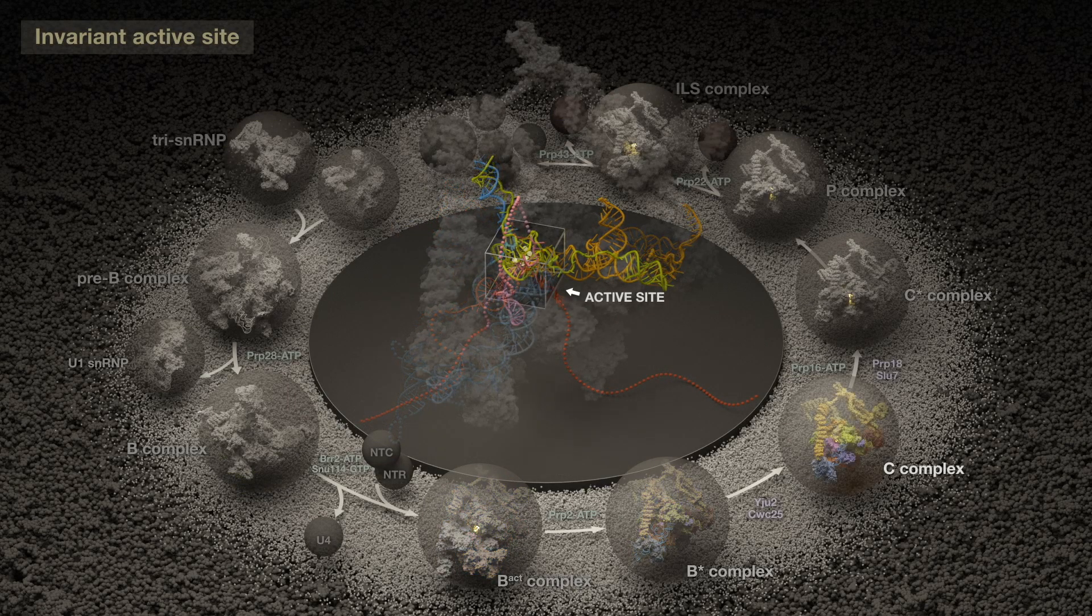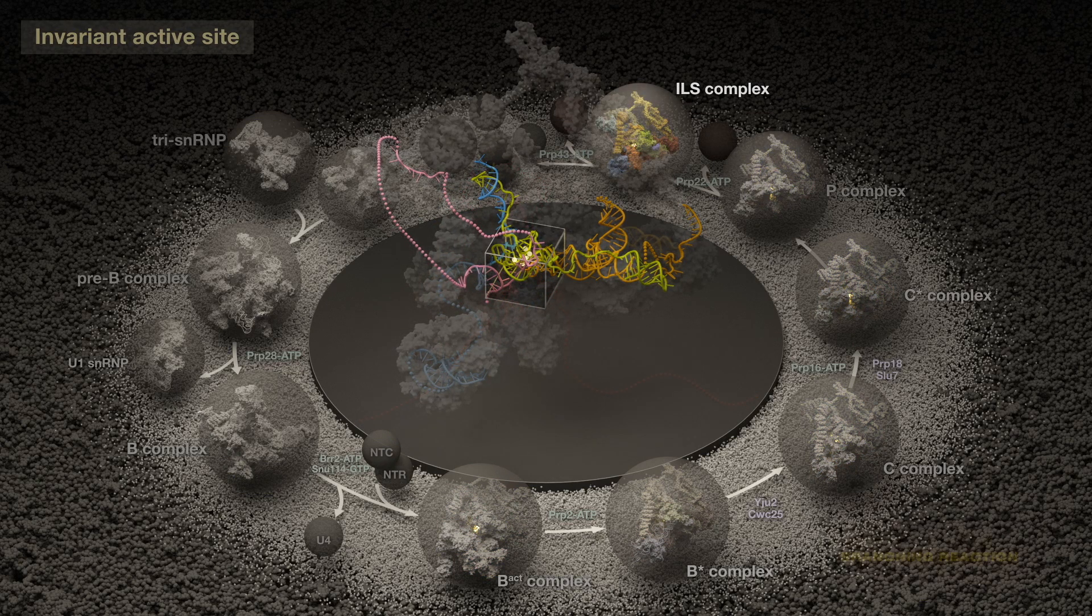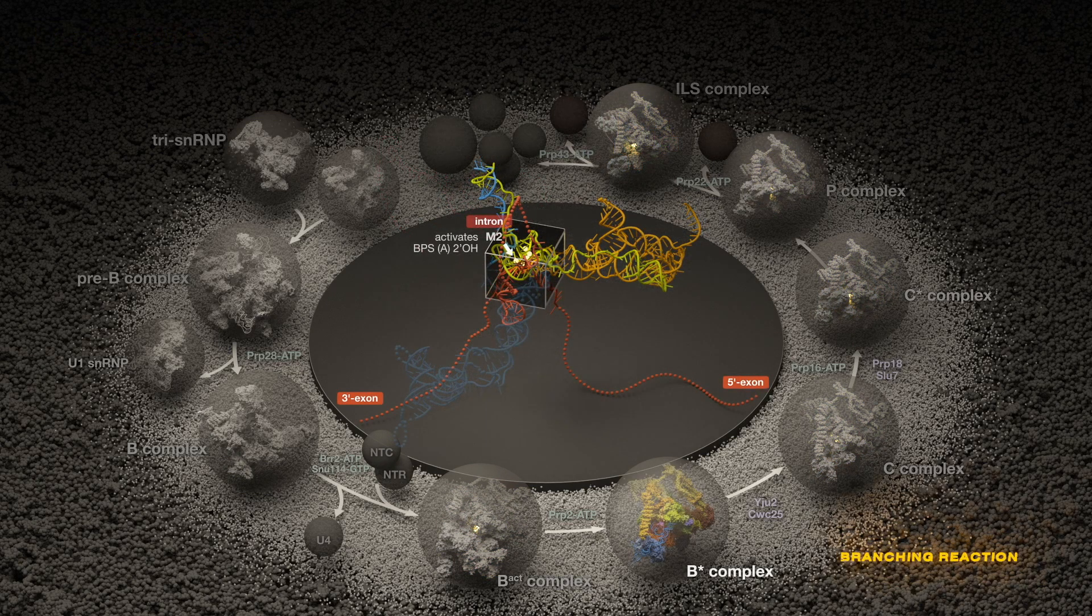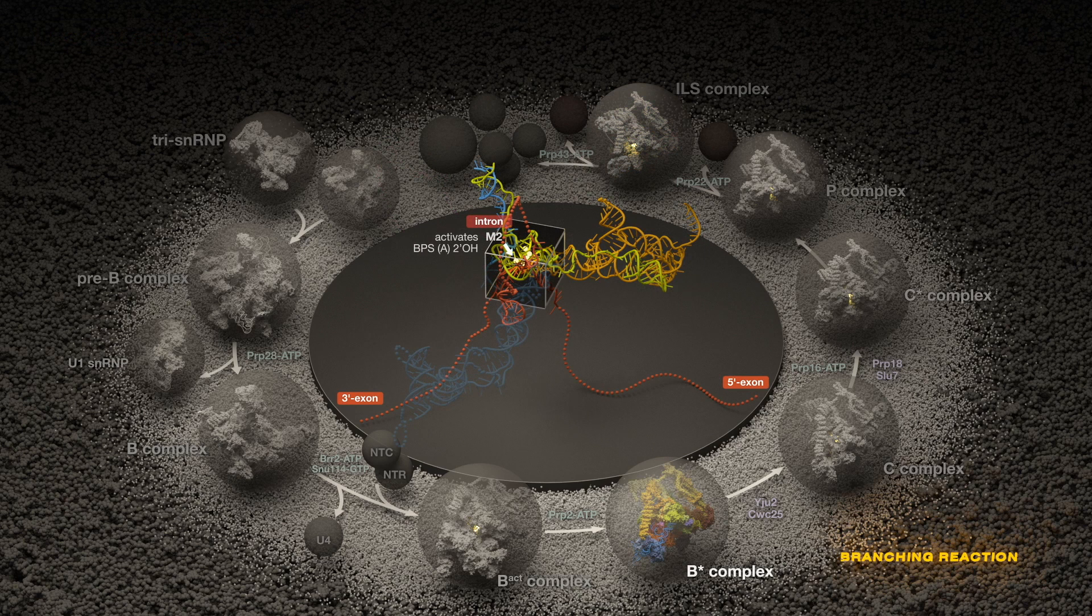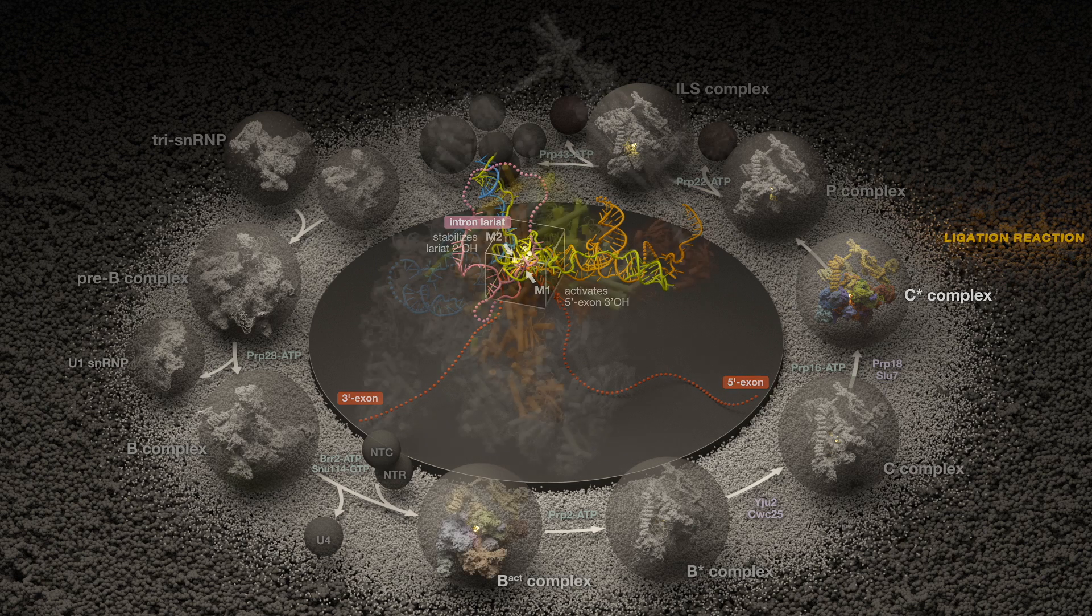The organization of the active site after it is created is mostly invariant. During branching, catalytic M2 ion activates the BPS nucleophile as M1 stabilizes the 5' exon leaving group. Then at ligation, M1 activates this moiety while M2 stabilizes the leaving intron lariat.